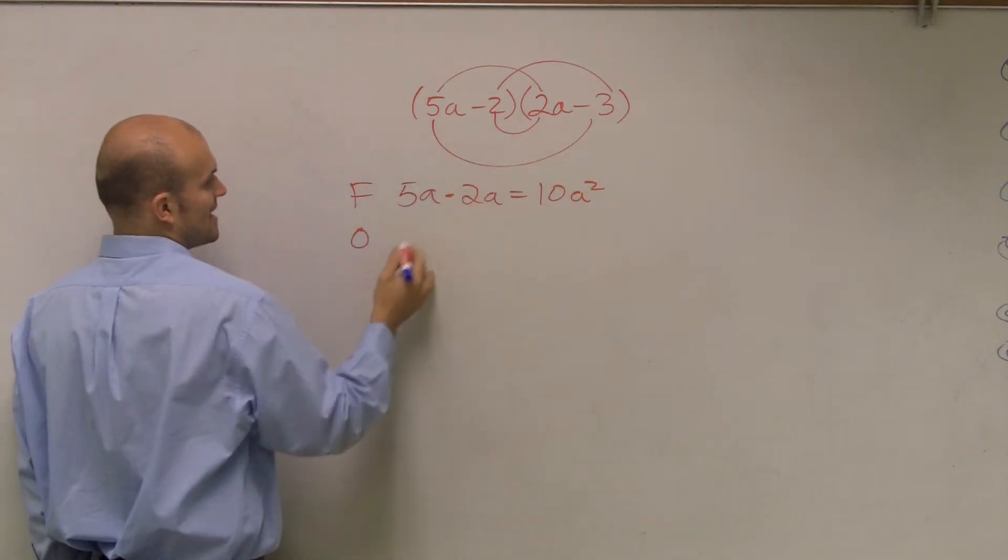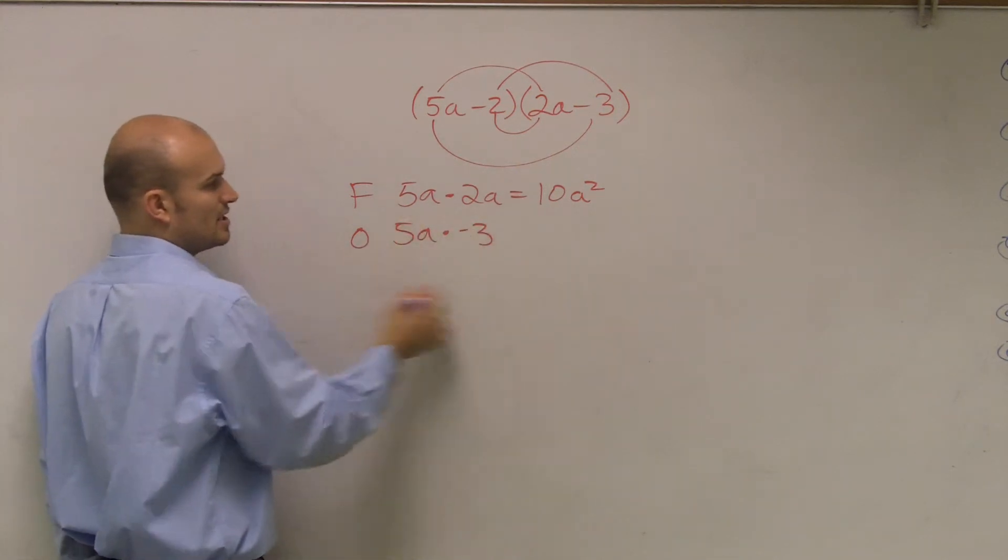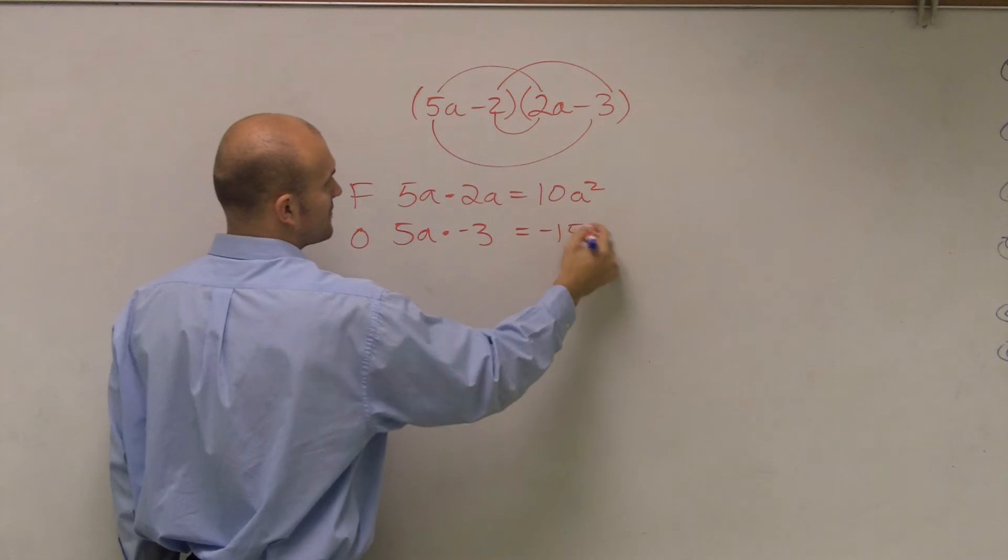Outer terms are 5a times negative 3, multiply the numbers, provides me negative 15a.